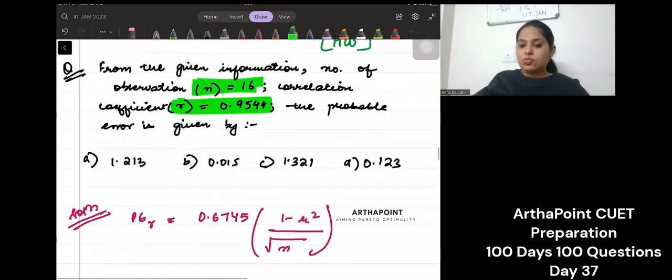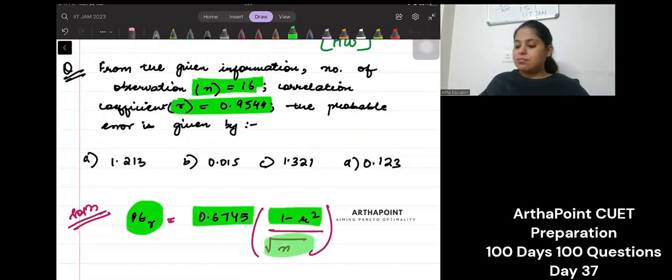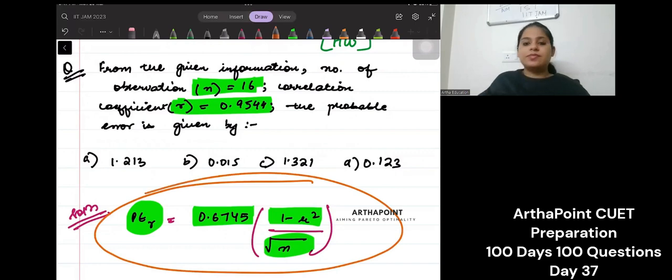Now, we know that the formula of probable error is 0.6745 times (1 minus R squared) by under root N. You have to remember this formula of probable error. So if you notice, I know the value of R, so I can find R squared.